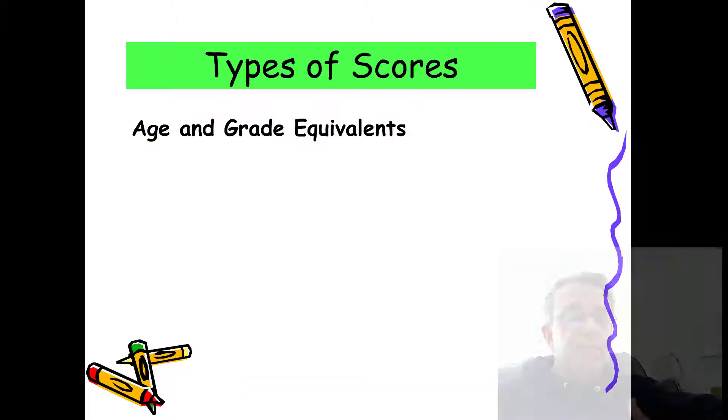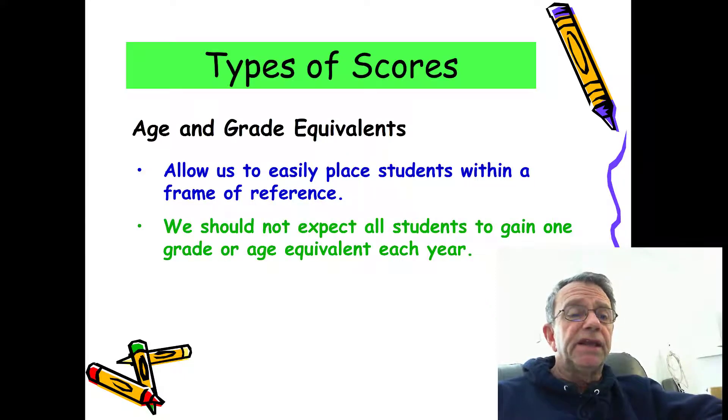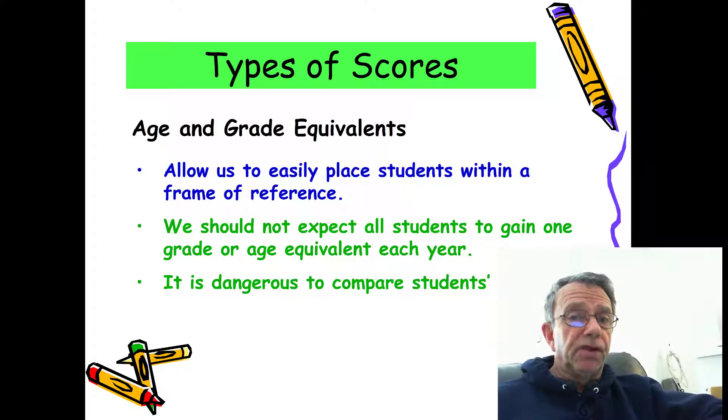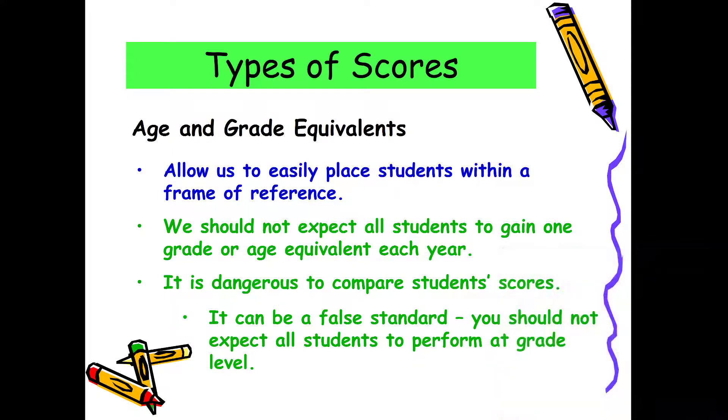An age equivalent is what many elementary school teachers are used to, especially with reading exams, where students receive an age equivalent like the student is reading on a third grade level. But you've got to be careful with age level scores. Many parents will get their child's scores back and see that their four-year-old is reading on a 3.5 grade level and think I've got to get him into the fourth grade.